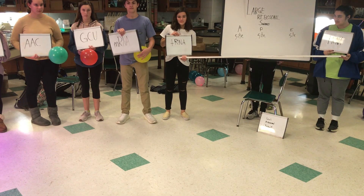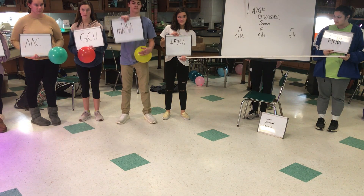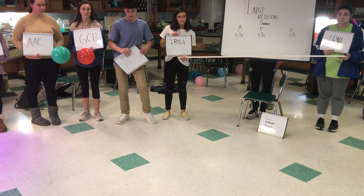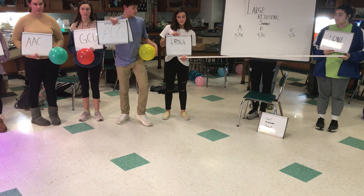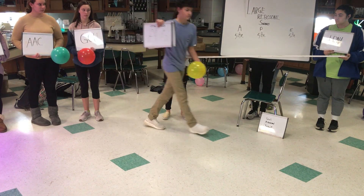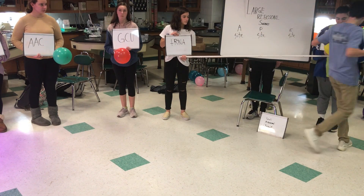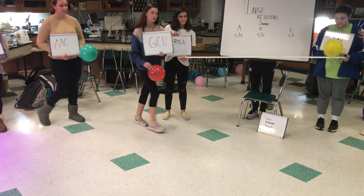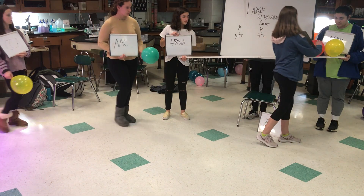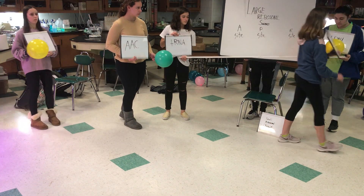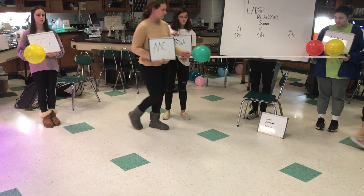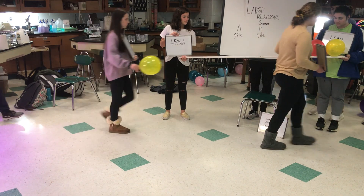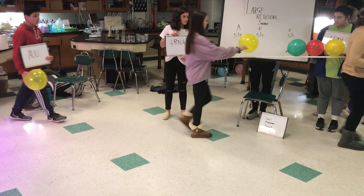The mRNA interacts with the ribosome, and translation starts with the start codon. The ribosome translates the mRNA in triplets called codons. The anticodon determines which amino acid the tRNA brings to the growing polypeptide chain.